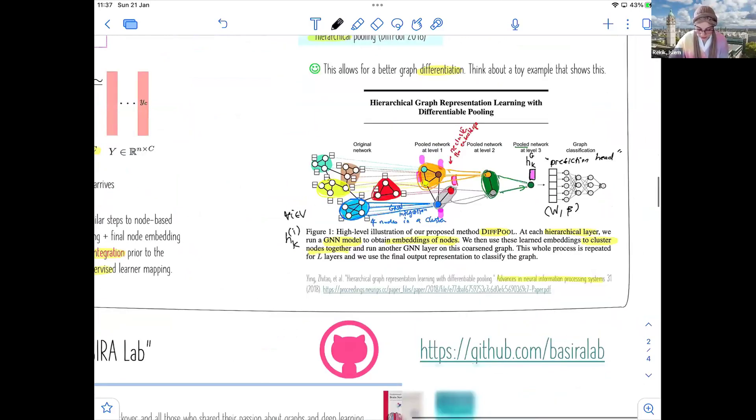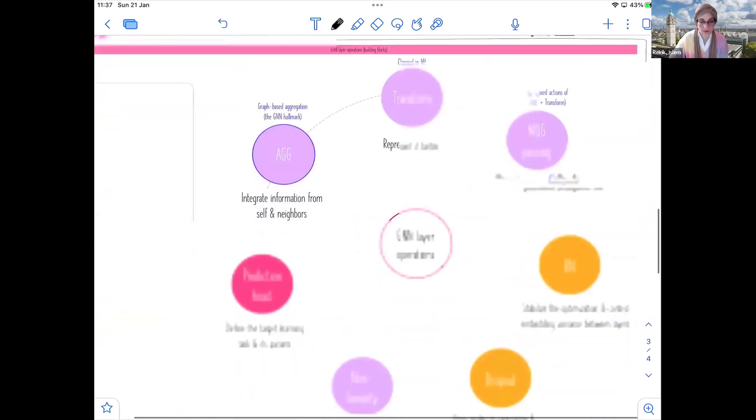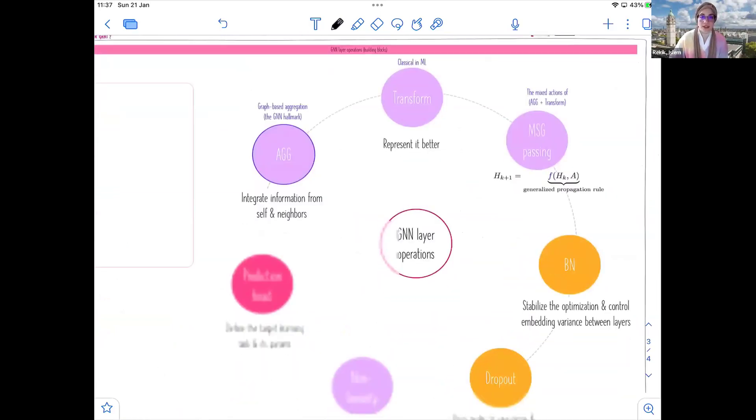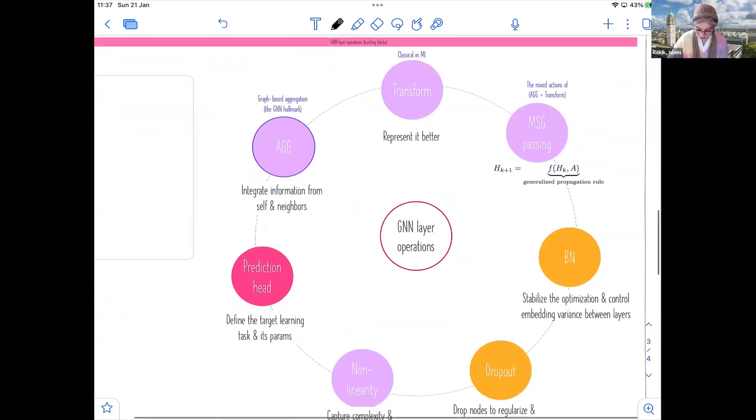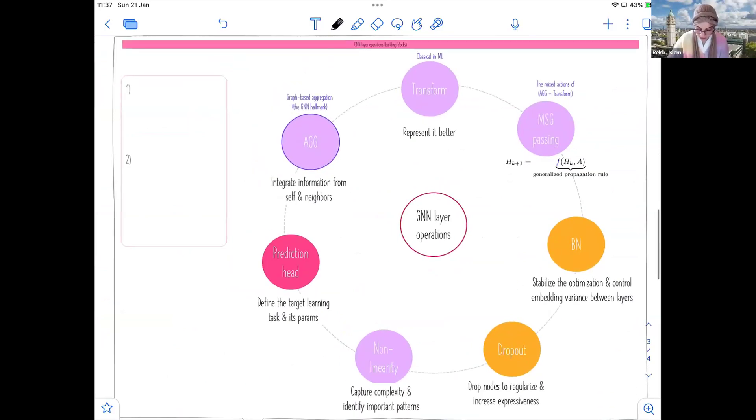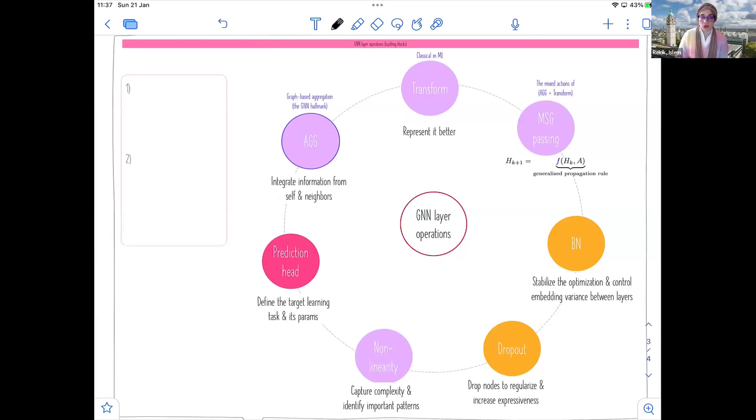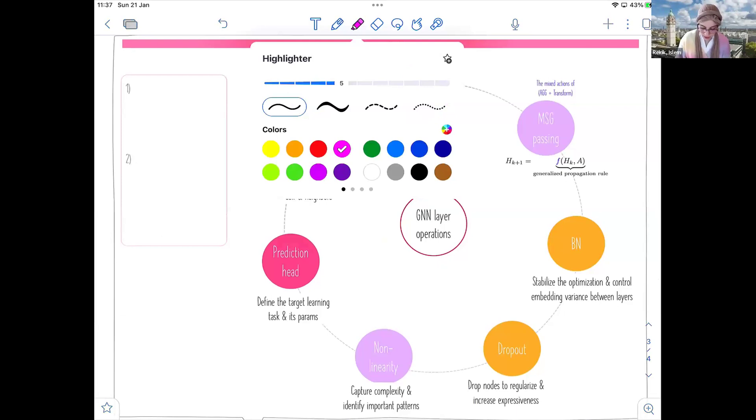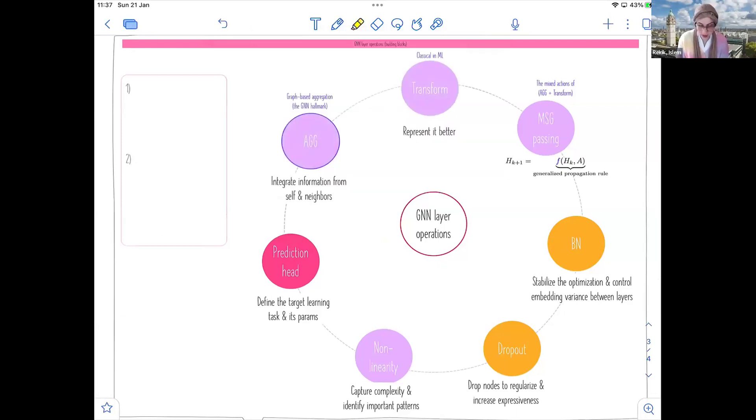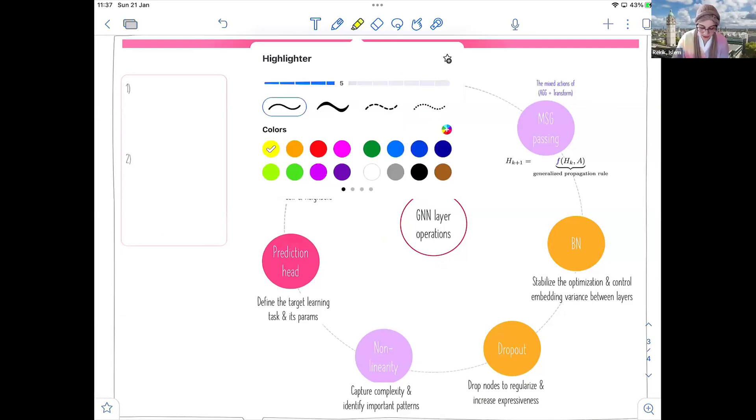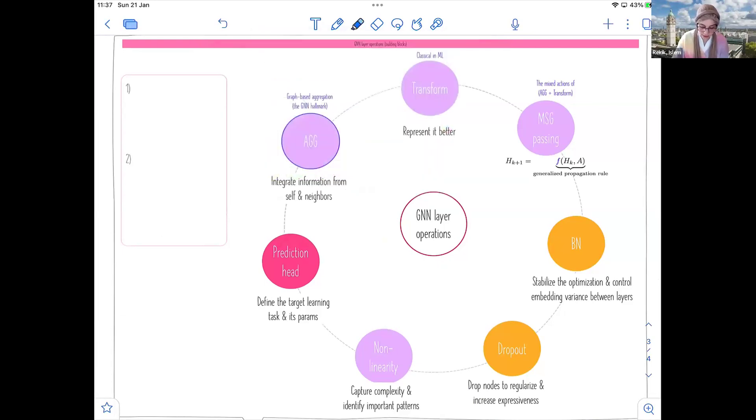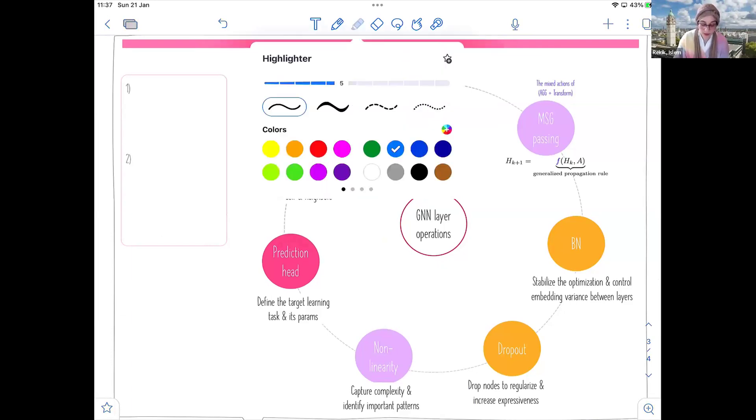Now in this section, we'll look at the different operations or the different GNN operations or building blocks that we use to create or design GNN models. There are many that we have seen already. So first, let's start with the first operation, which is aggregation. This aggregation is very important because this is what makes a GNN model. This is the hallmark of the GNN model.